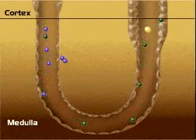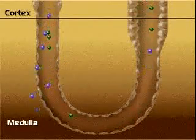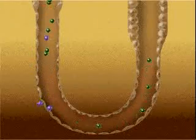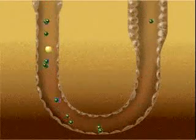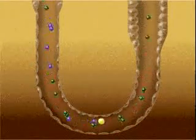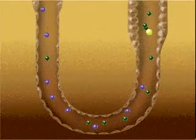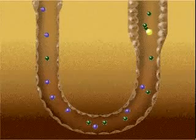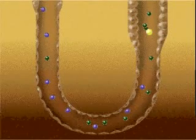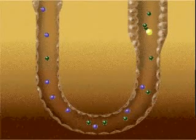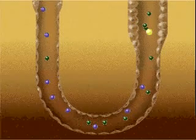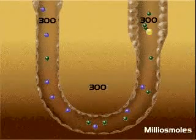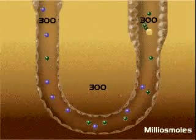The countercurrent multiplication system is responsible for not only elevating the concentration of urine in the loop, but more importantly, it elevates the concentration of the interstitial fluid as well. To explain this system, we must first imagine the loop filled with a stationary column of glomerular fluid, which includes water, salt, and urea. At first, the concentration of the glomerular fluid and the surrounding interstitial fluid will be equal at an osmolarity of 300 milliosmoles.